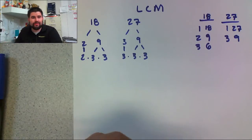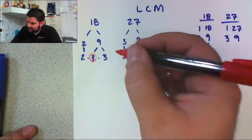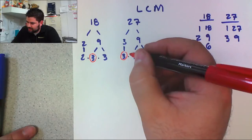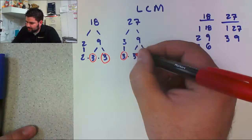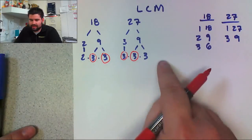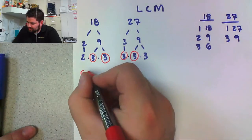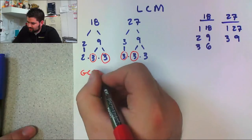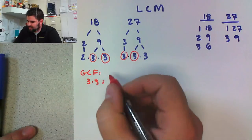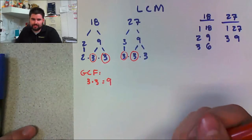Now, building off of last week, we found the GCF from this factor tree. What we were looking for was repeating numbers to find those greatest common factors. I'm going to find the greatest common factor. In this case there's a repeating 3 in 18 and a repeating 3 in 27, and another repeating 3 in each. There are no repeating 2s. So my GCF is going to be 3 times 3, which is 9.